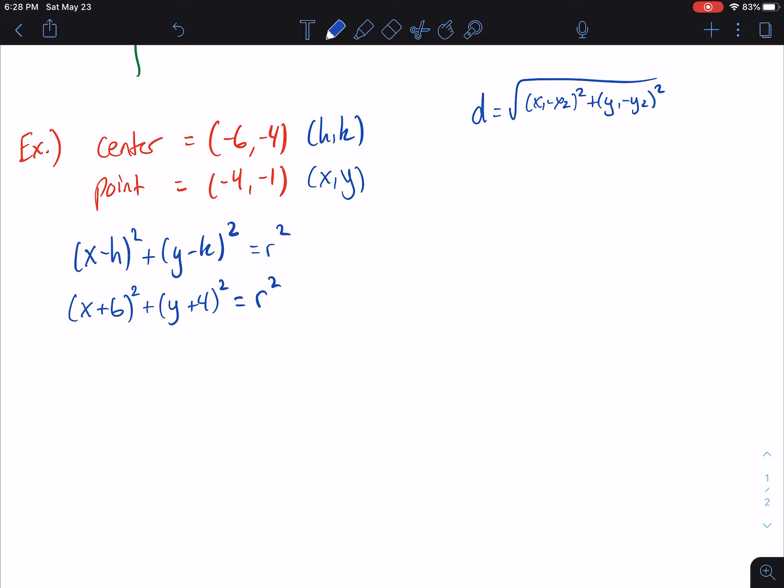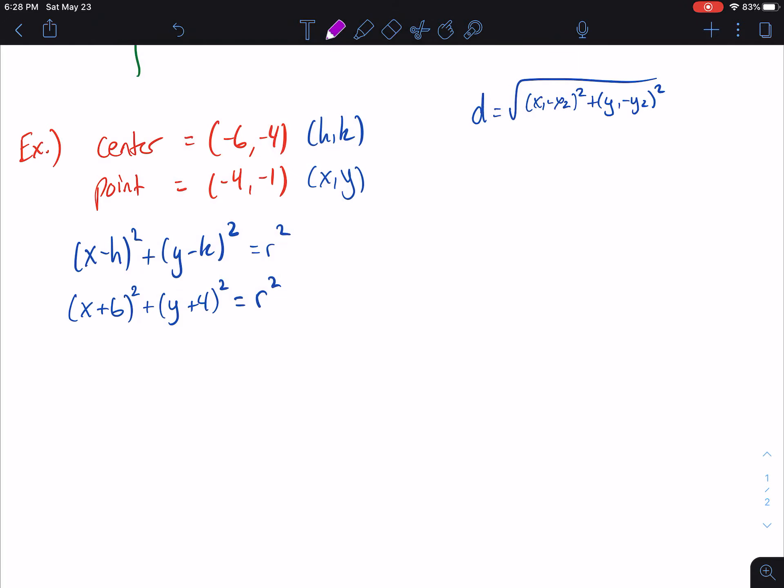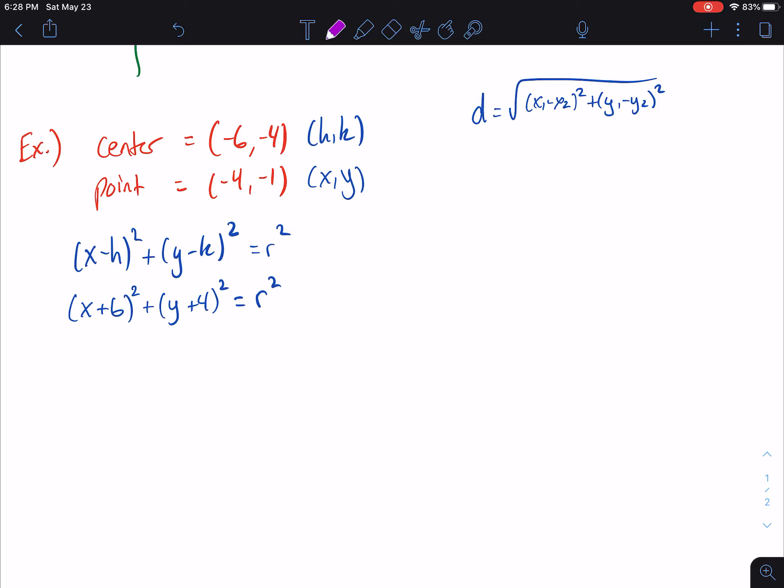So for that point, we have an x and a y. So we're temporarily going to plug in -4 and -1 for x and y. So it'll be (-4 + 6)² and it'll be (-1 + 4)². It's equal to r². So we're going to simplify. So this will be 2². This will be 3². So 4 + 9 = r². So we get 13 = r².